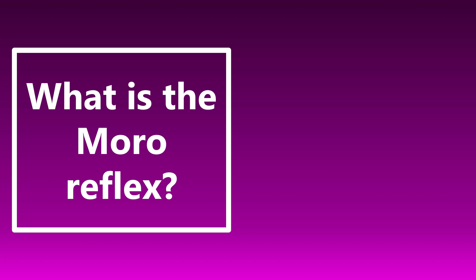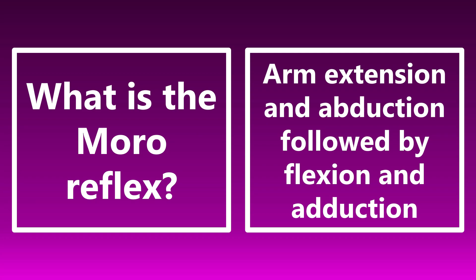The Moro reflex is an arm extension and abduction — movement away from the body — followed by flexion and adduction towards the body. This is an involuntary primitive reflex seen in children during developmental stages.